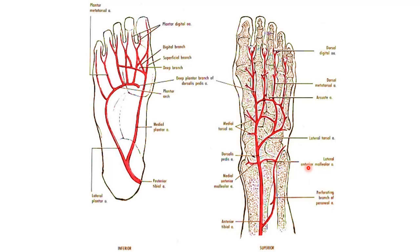The deep plantar arch is formed by the dorsalis pedis artery and the lateral plantar artery. The posterior tibial artery enters the sole of the foot through the tarsal tunnel and splits into the lateral and medial plantar arteries. The lateral plantar artery joins the dorsalis pedis to form the deep plantar arch. The arch gives rise to plantar metatarsal arteries, superficial branches, and plantar digital arteries supplying the plantar side of the foot and contributing to the supply of the toes.